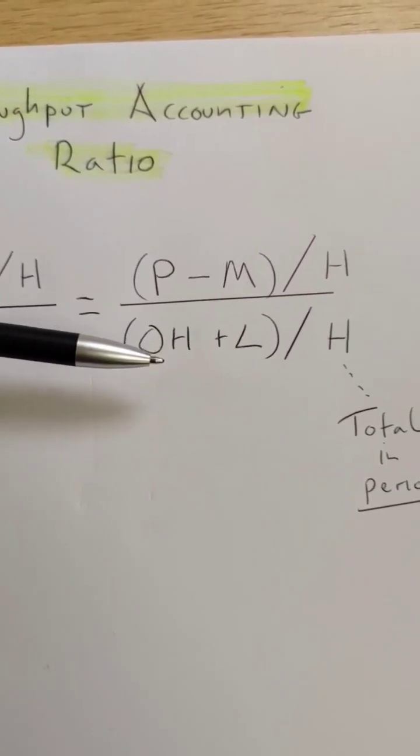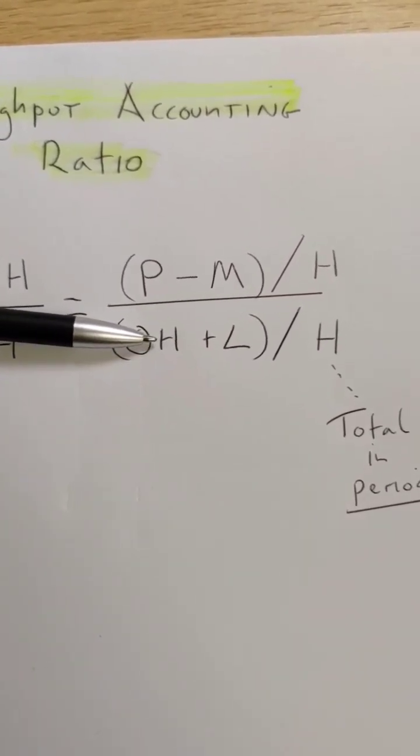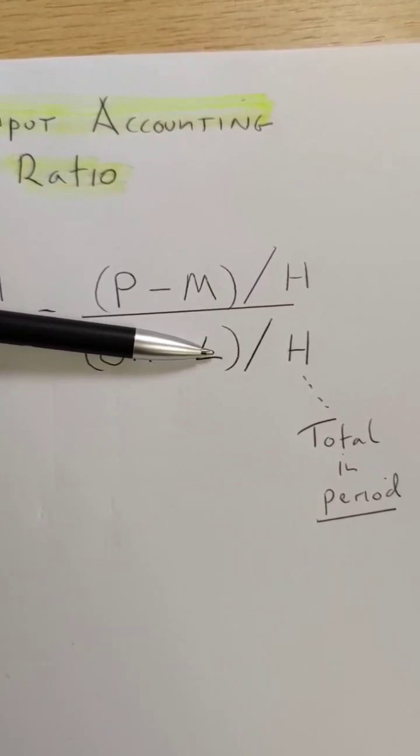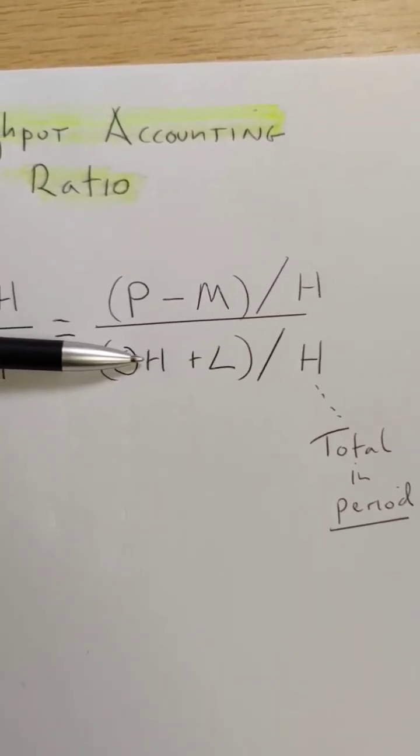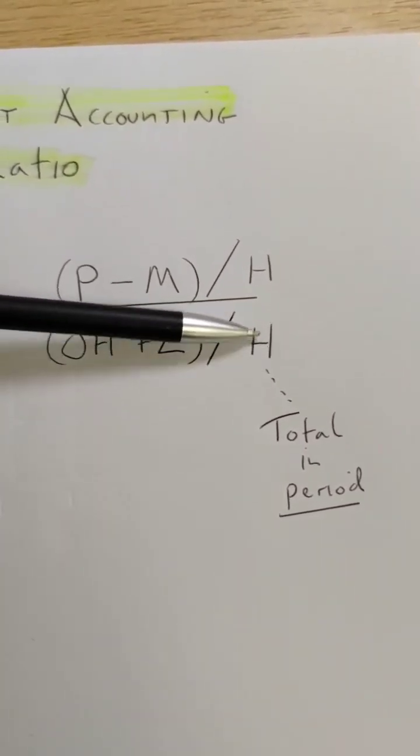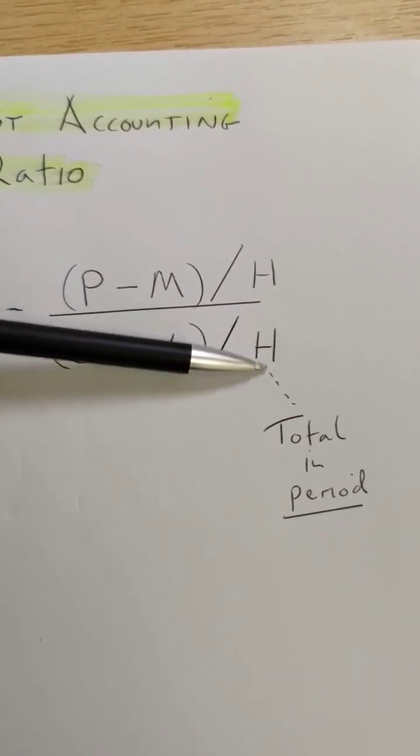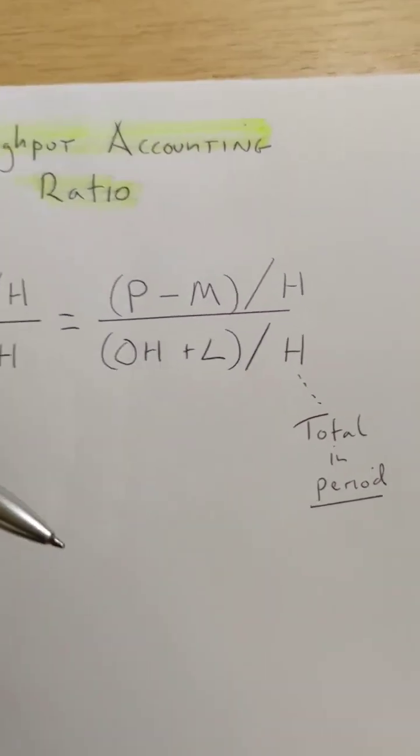Then I look in the question further, I find the overheads and the direct labor cost, that's the other factory costs, and then I add up the bottleneck hours in that time period. And that is the throughput. Thank you.